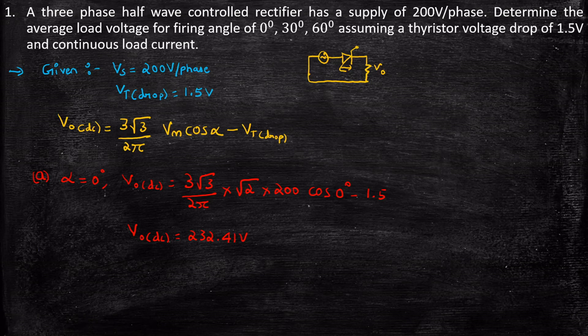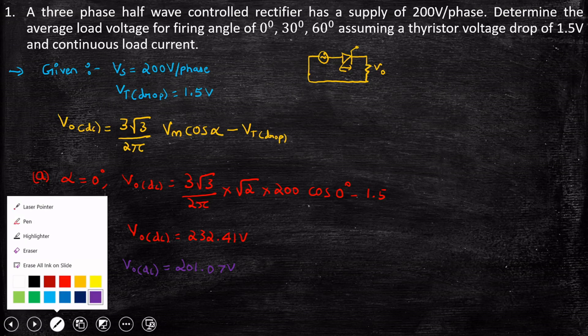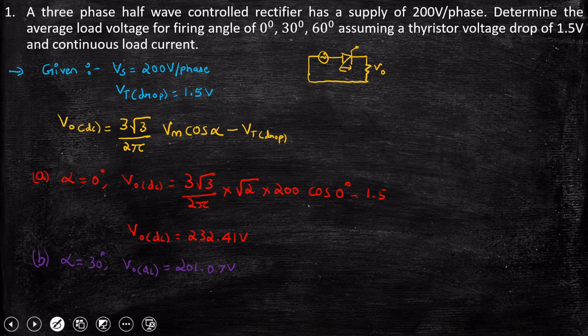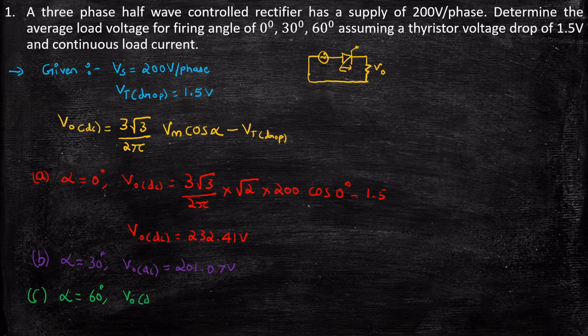Similarly, when alpha is equal to 30 degree, again substituting and simplifying, I'm not going to substitute these values here. But if you solve, you will be getting 201.07 volt. Similarly, when alpha is equal to 60 degrees, you will be getting Vout DC to be equal to 115.45 volt. So this is how we will solve these type of problems.